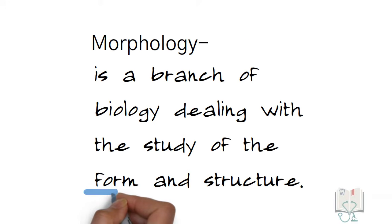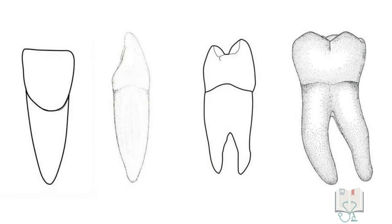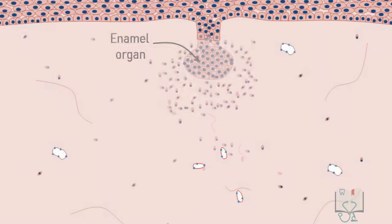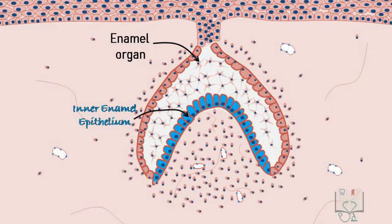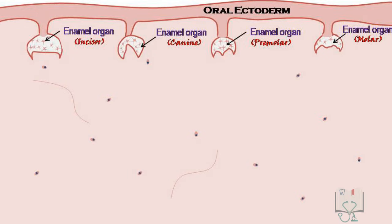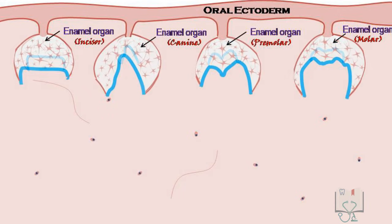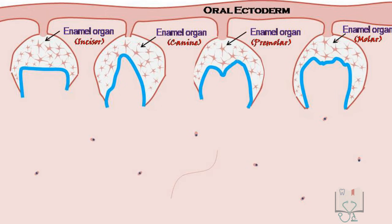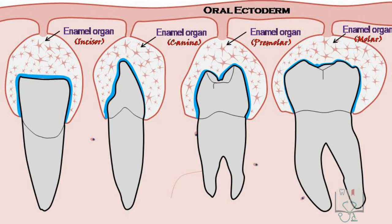Morphodifferentiation means the changing shape of the enamel organ so as to attain the shape of the tooth that is to be formed. In this stage, the final morphology of the tooth is decided. This stage starts when the enamel organ reaches the cap stage and the inner enamel epithelium starts taking the shape of the crown to be formed. Here we see enamel organs of different teeth all reaching the cap stage, but the shape of the inner enamel epithelium is different according to the tooth to be formed. As they continue to grow, the shape keeps transforming till the advanced bell stage, where deposition of enamel and dentine takes place. Similarly, the shape of the root is decided by the Hertwig's epithelial root sheath.